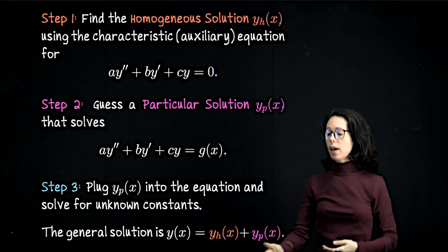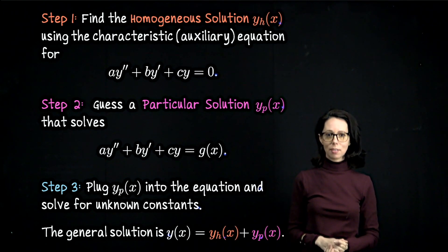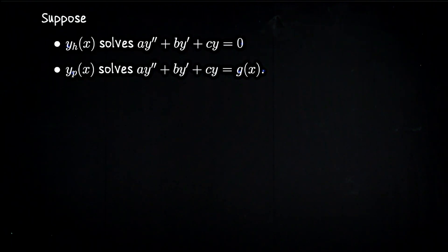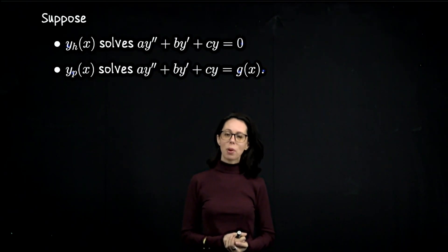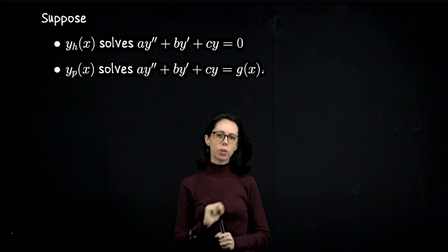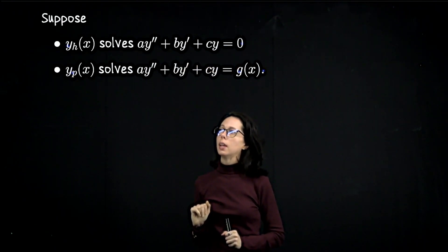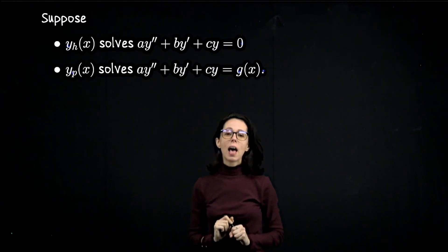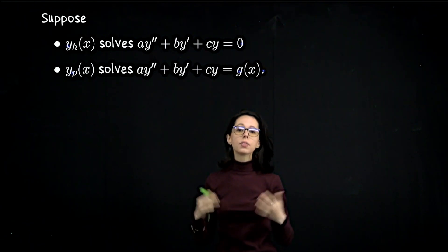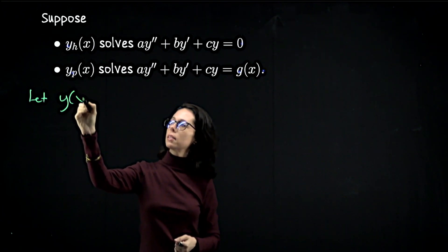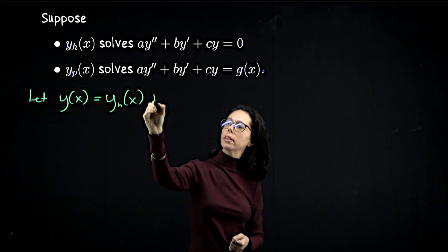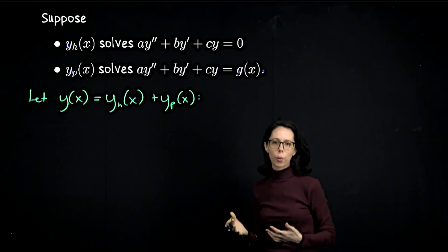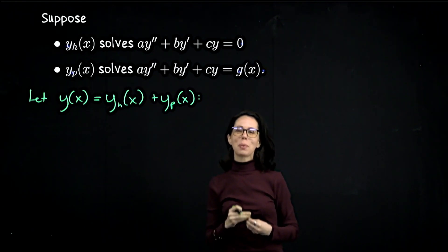Before we look at our example, let me justify that adding y sub h and y sub p is correct. Suppose y sub h, with two constants c1 and c2, solves the homogeneous problem, and y sub p, the particular solution with no constants, solves the non-homogeneous problem with forcing function g of x. Let's show that their sum solves the entire non-homogeneous equation. We let y of x be the sum of the homogeneous and particular solutions, and imagine plugging y into a y double prime plus b y prime plus c y equals g of x.